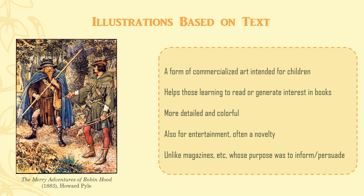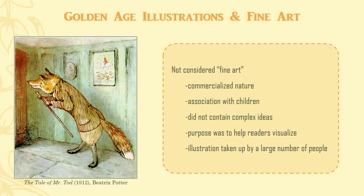The majority of the Golden Age was comprised of artwork revolving around text or a product. In children's books, it was a novelty, or a tool used to help children learn to read or increase their interest in reading and learning. In commercial art, the images were meant to inform or persuade. These purposes led to a negative perspective of illustrators and their art. Illustrations for books and magazines were not considered fine art. Their association with children, and especially their commercialized nature, separated them from what was considered fine art — something that had a non-monetary purpose, was complex and intellectual, and was definitely not accessible to everyone.